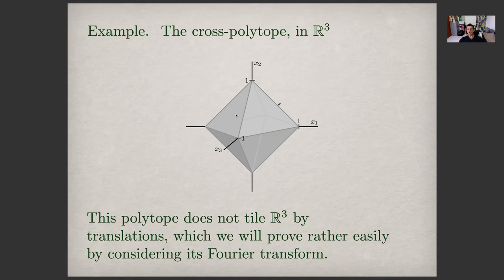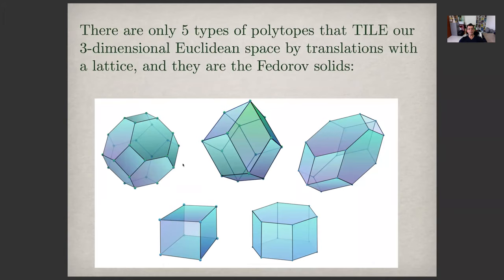The cross polytope in dimension three is this one here. It's an example of a polytope that does not tile Euclidean space. We will see why by looking at its Fourier transform, in particular, the zero set of its Fourier transform.